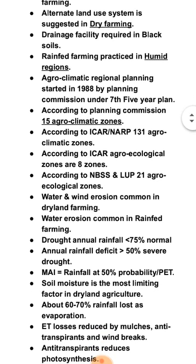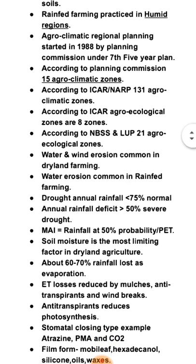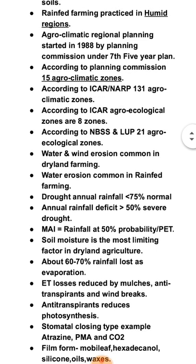In dryland farming, water and wind erosion are common. Water erosion is common in rainfed farming. Drought is defined when annual rainfall is less than 75% of normal. Annual rainfall deficit more than 50% is called severe drought. Moisture Availability Index (MAI) equals rainfall at 50% probability divided by PET (Potential Evapotranspiration).